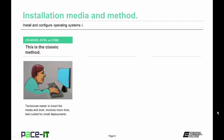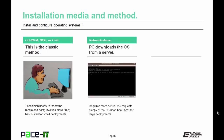For installation methods, physical media is the classic method — power up the system, install the disk, and wait. The technician needs to have the media, and this is best suited for small deployments. For network deployment, the PC downloads the operating system from a server. This requires more hardware setup — the PC gets fired up and requests a copy of the OS upon boot. This is best for larger deployments.